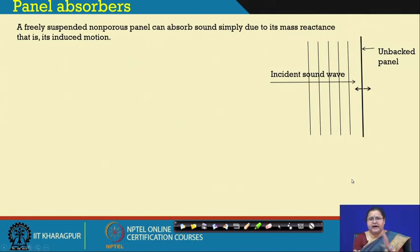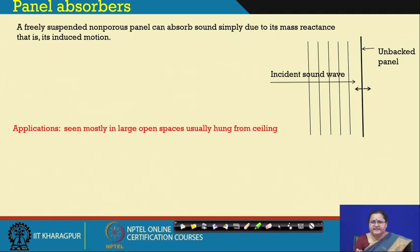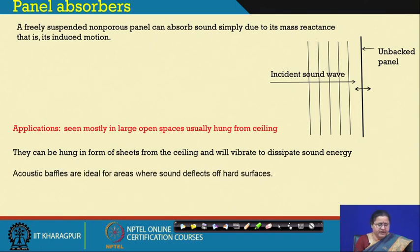The incident sound wave on an unbacked panel will set it into motion — as you can see from the two arrows — and due to mass reactance will induce motion, helping the system vibrate and absorb some amount of sound. It is mostly seen in large open spaces hung from the ceiling. They can be hung in the form of sheets from the ceiling, vibrating and dissipating sound. These are also termed acoustical baffles and are ideal where sound deflects from a hard surface.